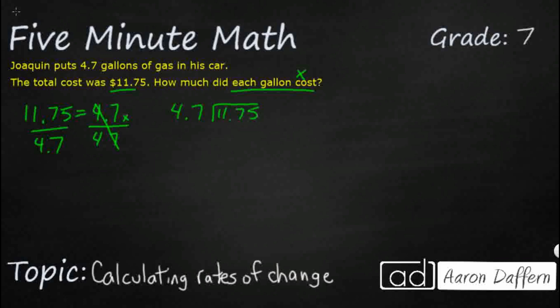So we have 4.7 into 11.75. We know that when we divide, we don't want any decimals in the divisor. So we're going to multiply this by 10, move it over once. So we're going to multiply this by 10 to keep it balanced, move it over once. So really it's 47 into 117.5.